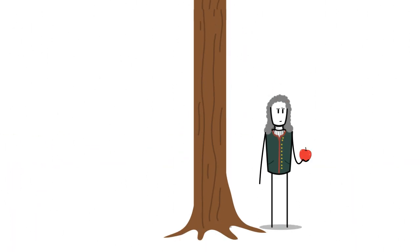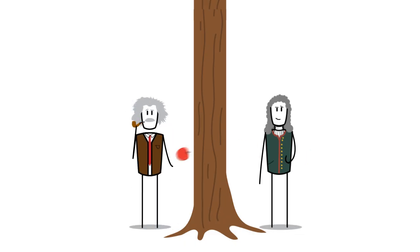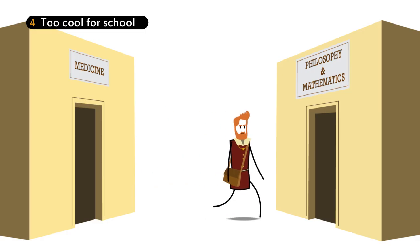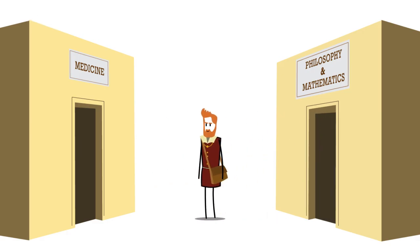Galileo entered the University of Pisa in 1585 to study medicine but was drawn instead to philosophy and mathematics. In the end, he left university without a degree but still managed to become a professor.